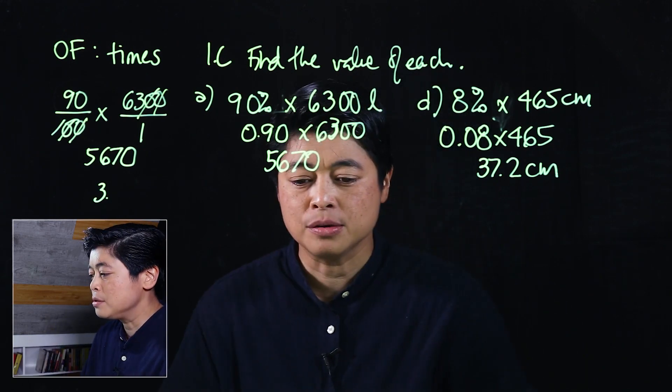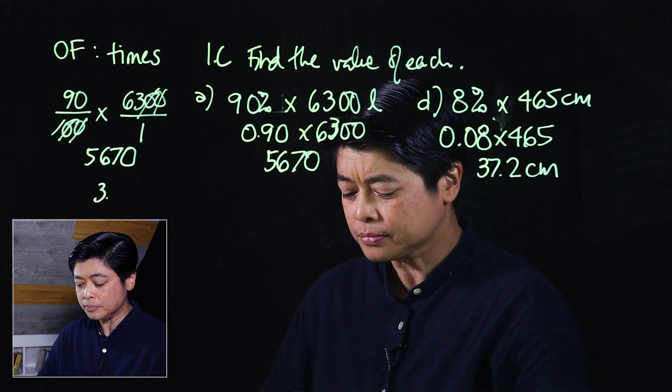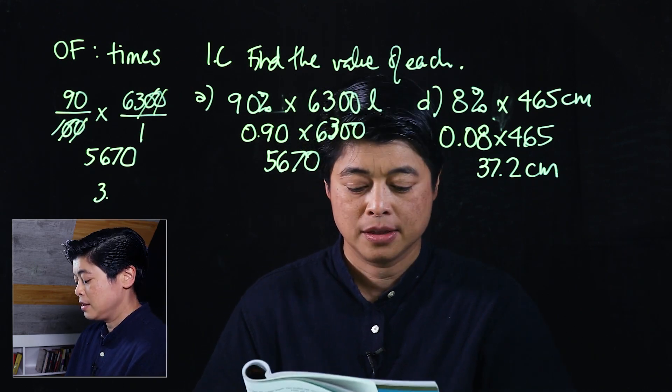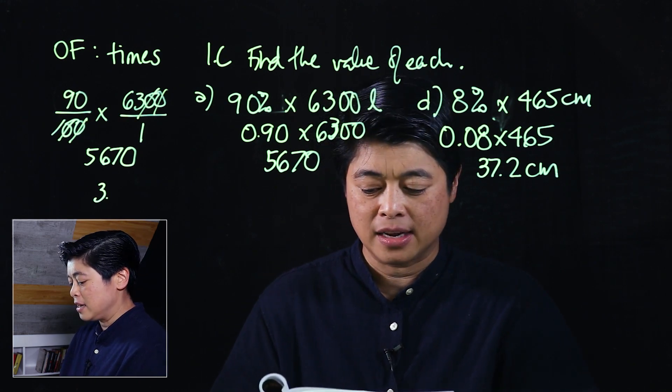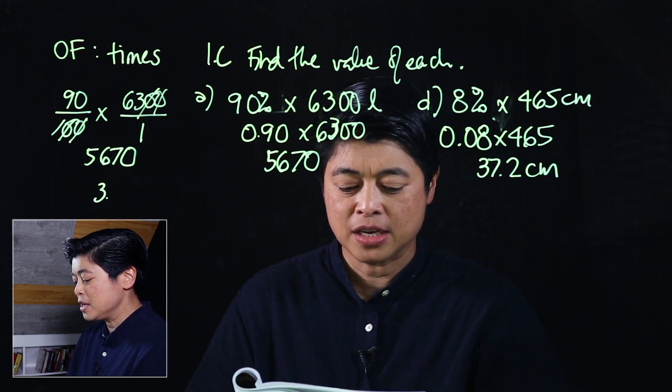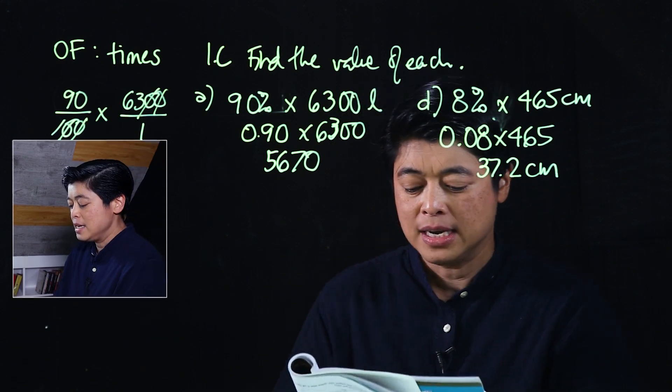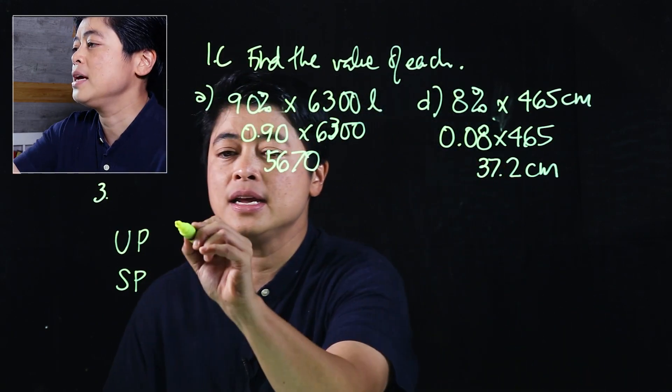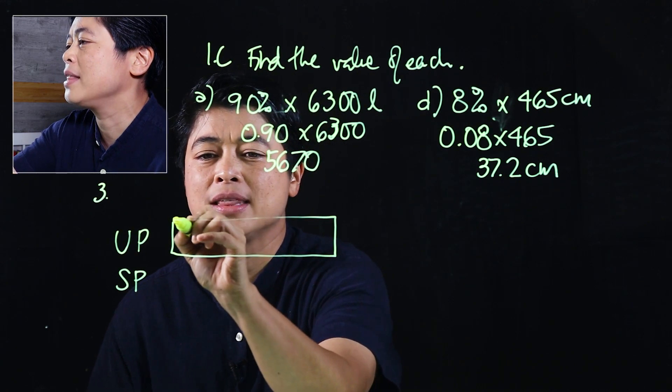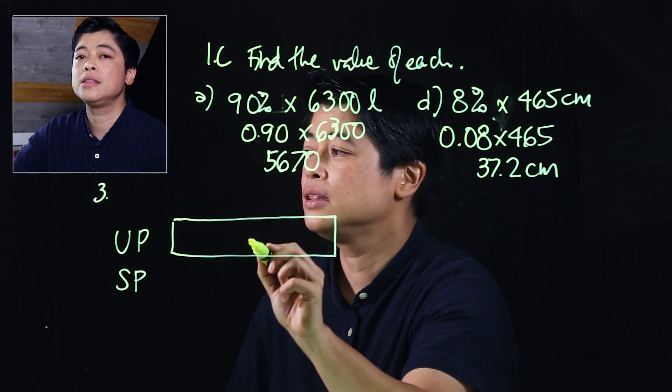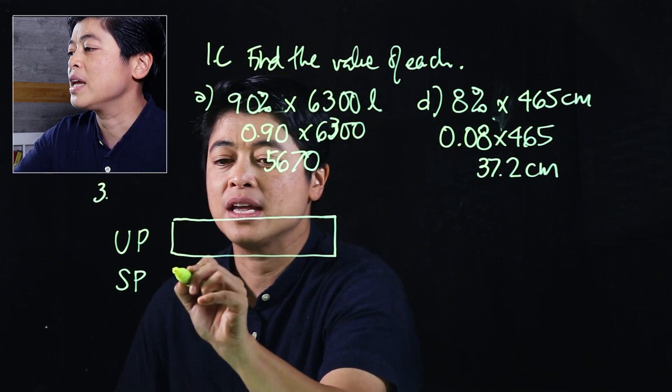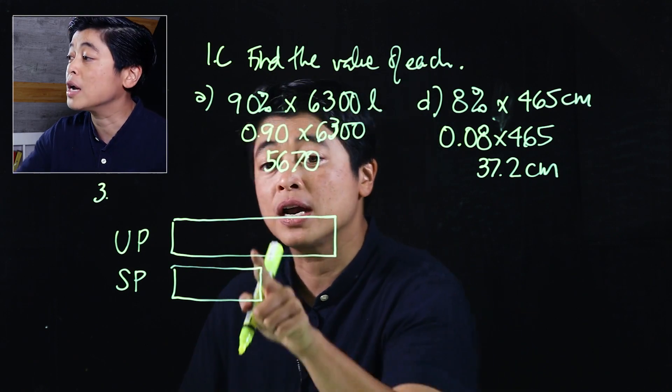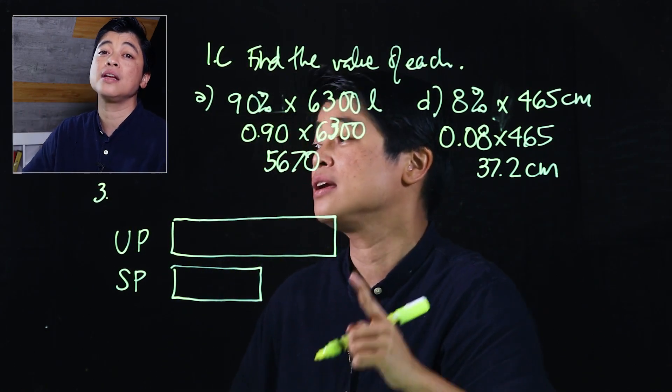As an application, we will do number three on page 63. It says an admission ticket to a museum cost $35. Each senior citizen was given a 15% discount. How much was the citizens discount? It gives a bar model, usual price, and it gives a sales price. Now, I don't like the way that they put the numbers onto here. So for consistency sake, when we're given values, it will go outside of the bar model.